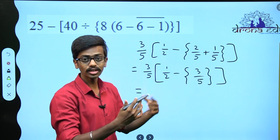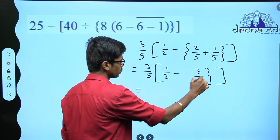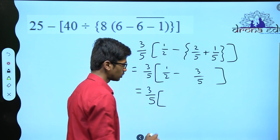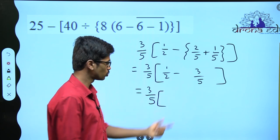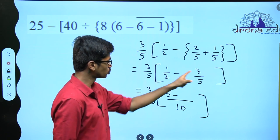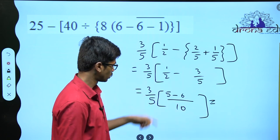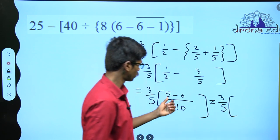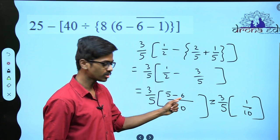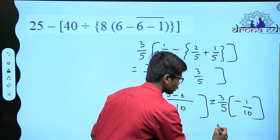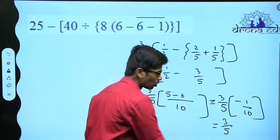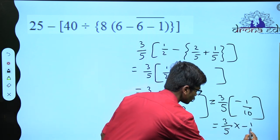I have 1 by 2 here and 2 by 5 plus 1 by 5 — since they are like terms, 2 plus 1 is 3. I have 3 by 5, so close the bracket. If it is just a single number, remove the brackets. After removing the bracket I am left with 1 by 2 minus 3 by 5. What is the LCM of 2 and 5? It is 2 into 5, so 10. Numerators: 5 into 1 is 5 minus 2 into 3 is 6. What is 5 minus 6? It is minus 1. So I have minus 1 by 10. Put the sign of the bigger number, so it is minus 1 by 10.